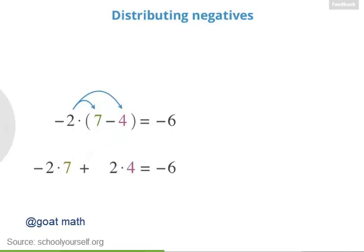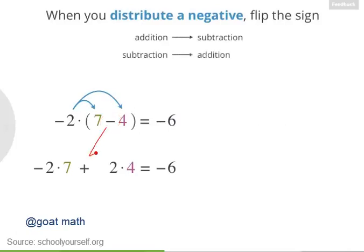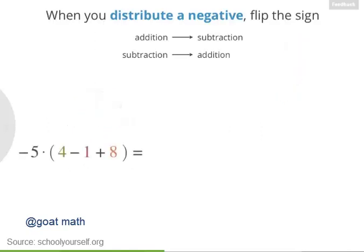So what's going on here? Well, when you distribute a negative number, you're flipping the plus and minus signs. Any addition inside the parentheses becomes subtraction, and any subtraction becomes addition outside the parentheses. Try using this fact in another example.